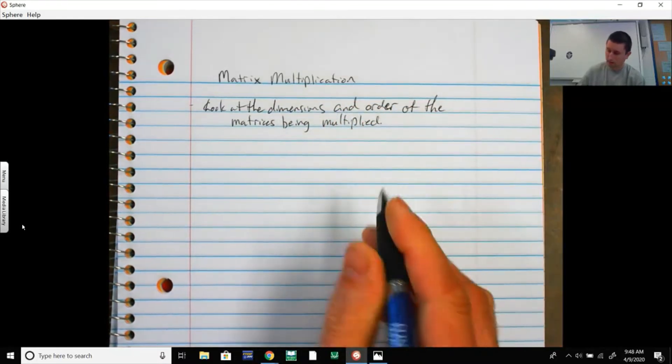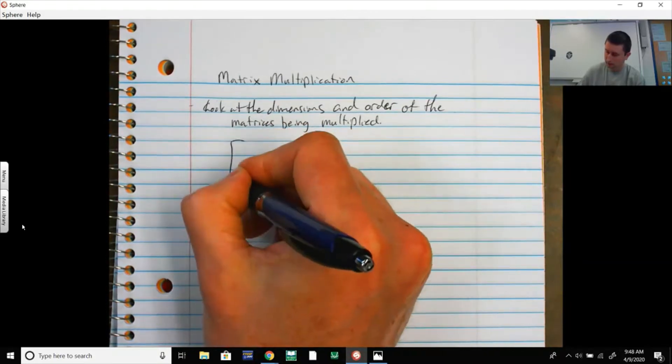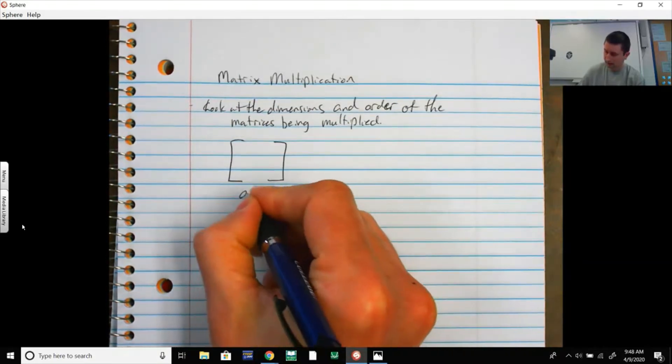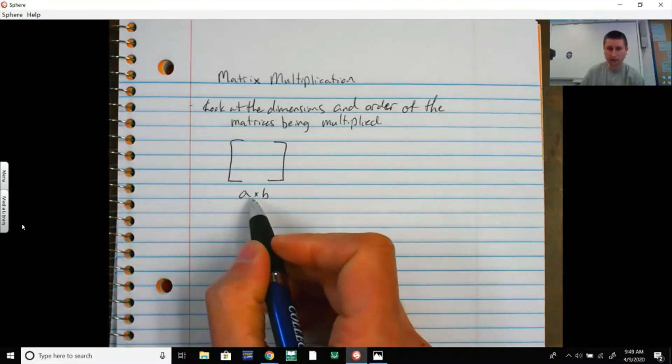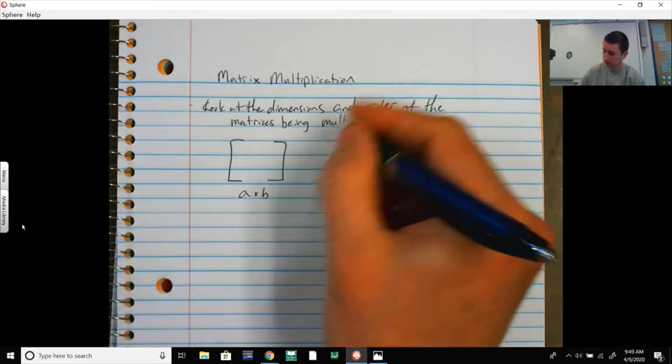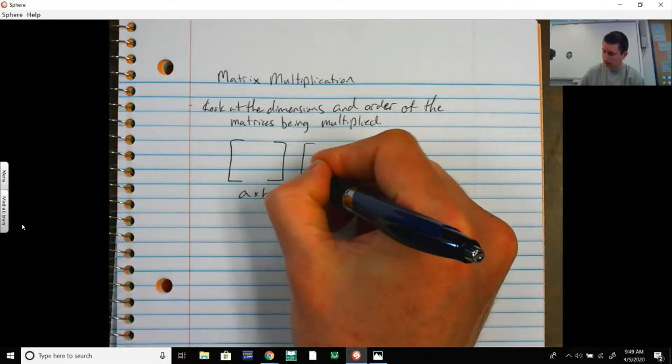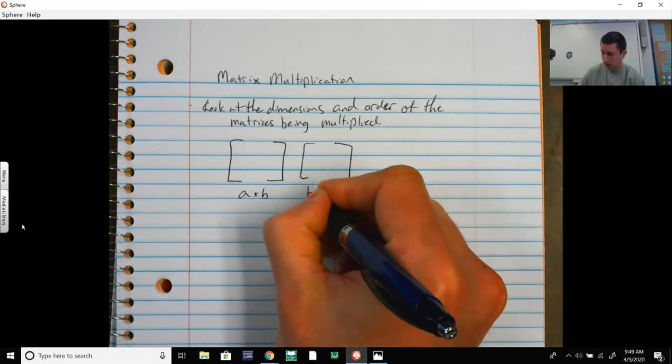If you have two matrices, and this has a rows and b columns, so we have a rows and b columns, and we're multiplying it by something that has b rows and c columns. Rows by columns, rows by columns.